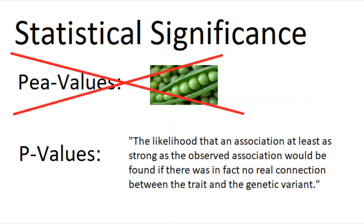P-values measure the likelihood that an association at least as strong as the observed association would be found if there was in fact no real connection between the trait and the genetic variant.